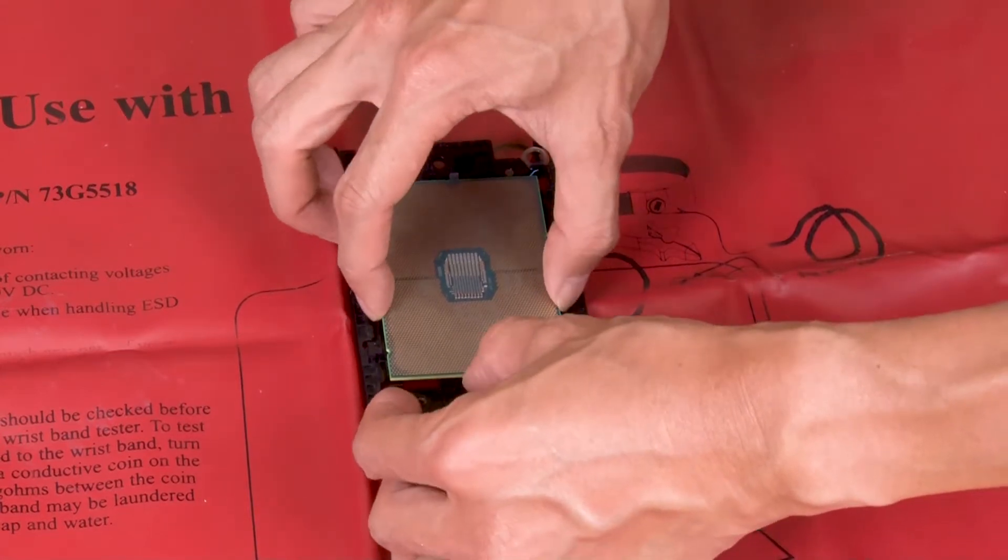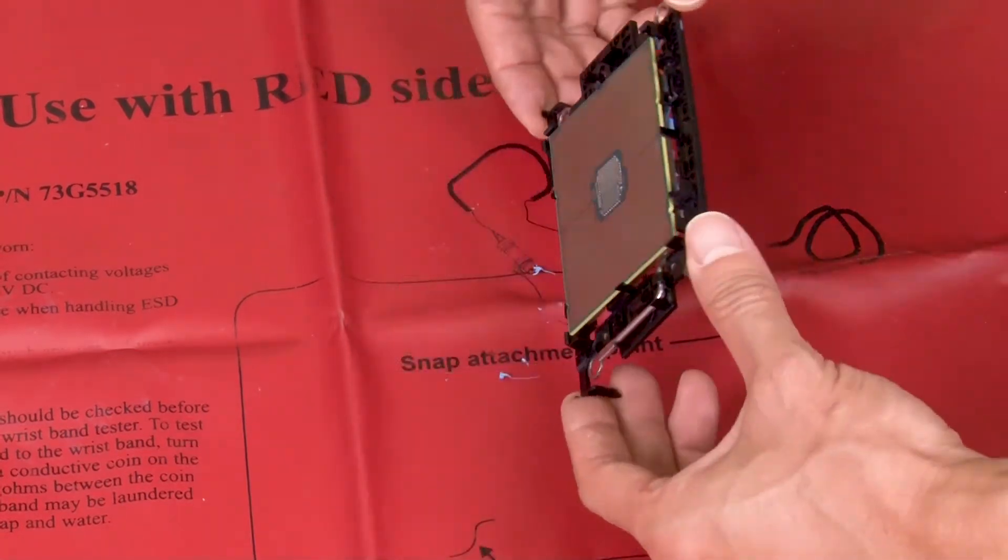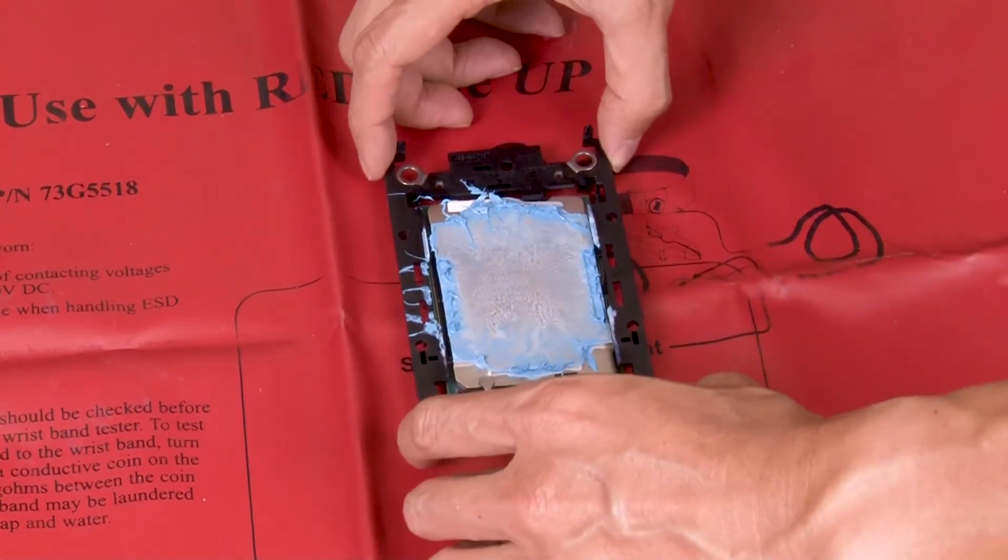Carefully push the long sides of the carrier down and away from the processor. Press the processor down to secure the sides under the clips on the carrier.